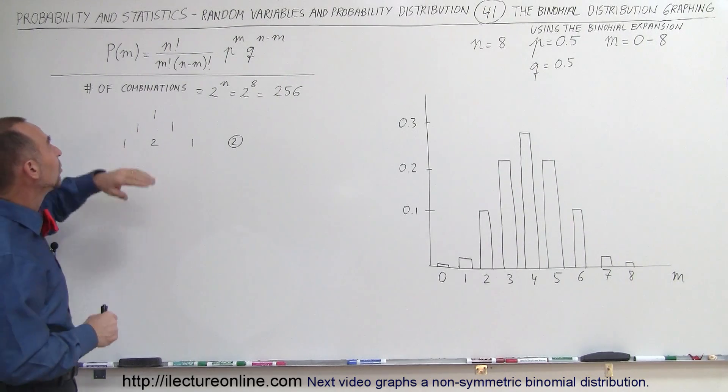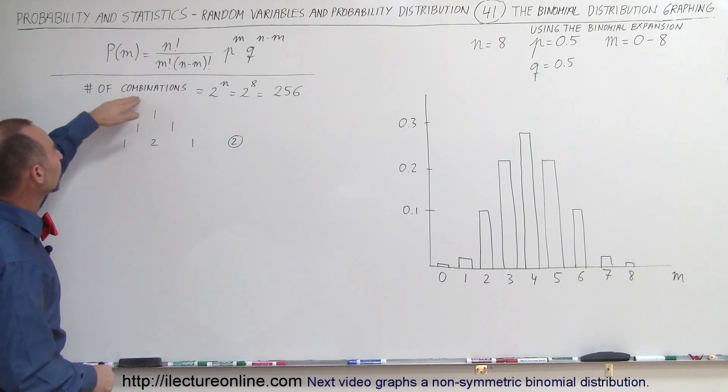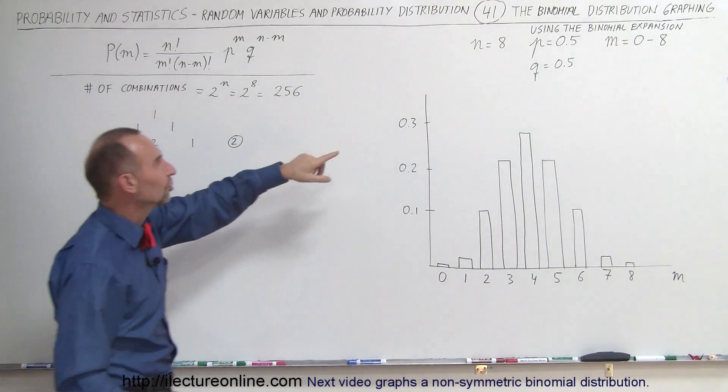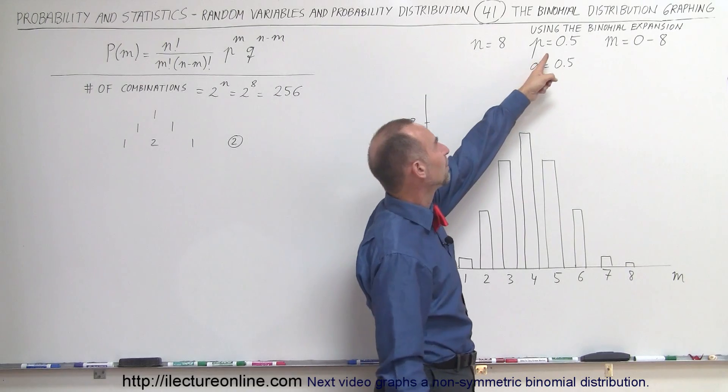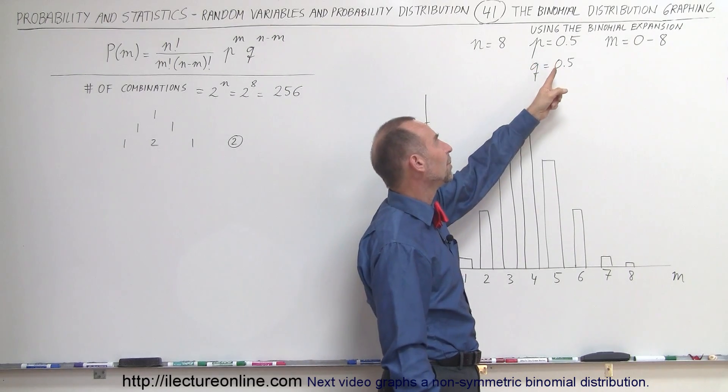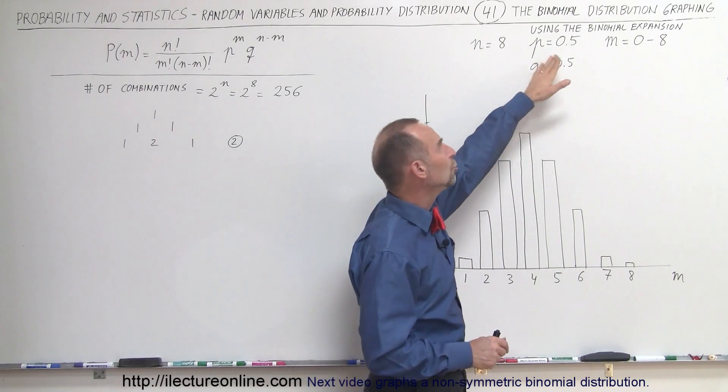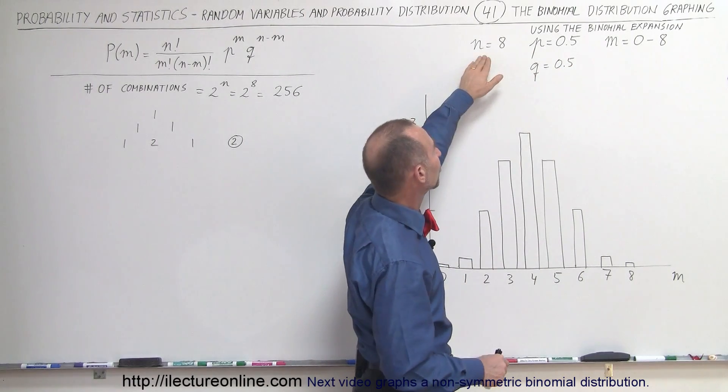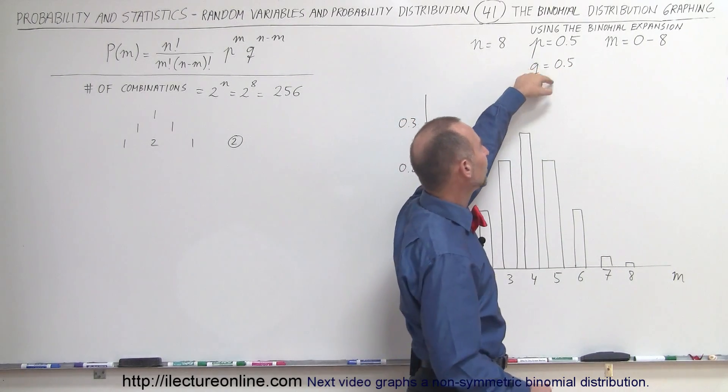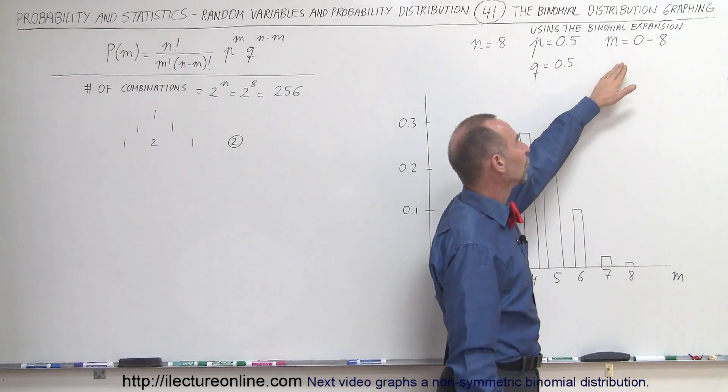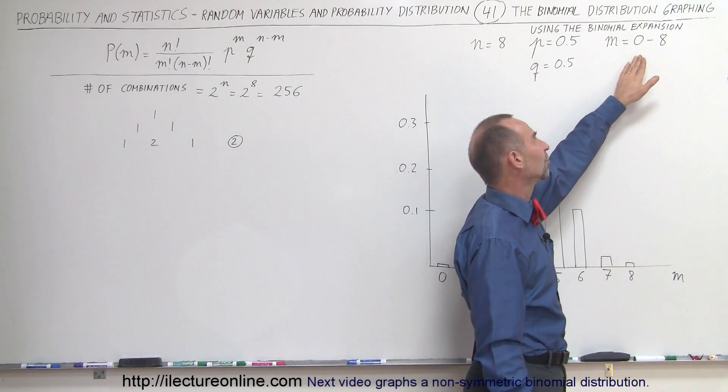So first of all, what we need to do is we need to come up with the number of combinations. And so since there's n trials and the probability of success and the probability of failure is equal to each other, 0.5, we can go ahead and use the binomial expansion. The number is relatively small and the probabilities are the same. And so we're going to do it for all values of success from 0 to 8.